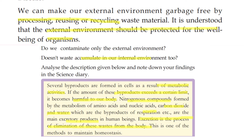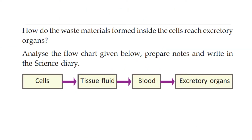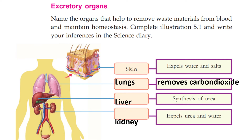Excretion is one of the methods to maintain homeostasis — body balance. How do waste materials formed inside the cells reach the excretory organs? The waste products travel from cells to tissue, tissue to blood, and blood to excretory organs.